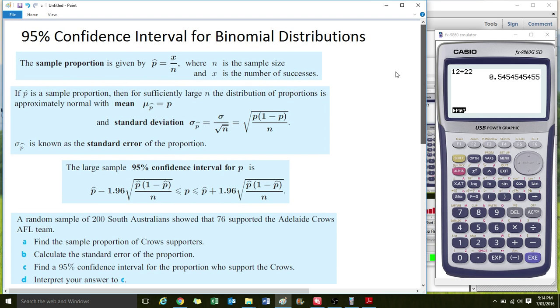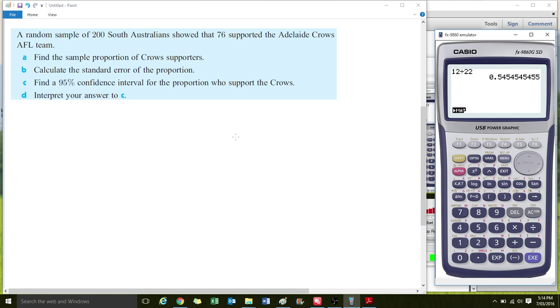If you can recall, P equals X over N, shown at the top here. So all we need to do is write that out. So we have A, P equals X over N. Now X is the number of successes, which equals 76 over 200. Let's calculate that one. So we've got 76 divided by 200, and our answer is 0.38. So our P-hat equals 0.38. Our sample proportion is 0.38. 0.38 of people in South Australia, or this sample of people, support the Crows.